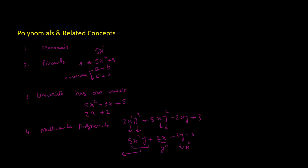So this is another way of classifying polynomials: based on the number of variables. The earlier classification was based on the number of terms. You should be familiar with both: classifying based on number of terms, and classifying based on number of variables.